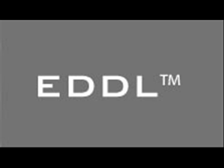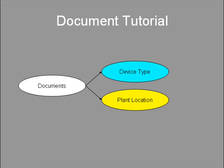Now let's see what other documents are accessible from device management software based on EDDL technology. There are two kinds of documents: device type documents and plant location documents. Device type documents come from the device manufacturer. Plant location documents come from the project engineering company, not from the device, because they are application specific.